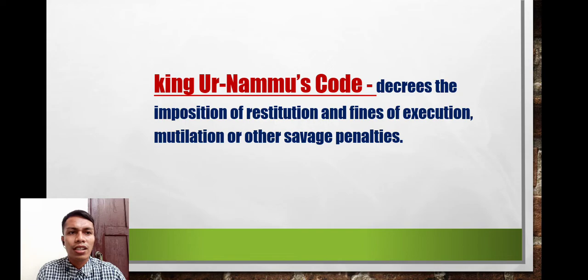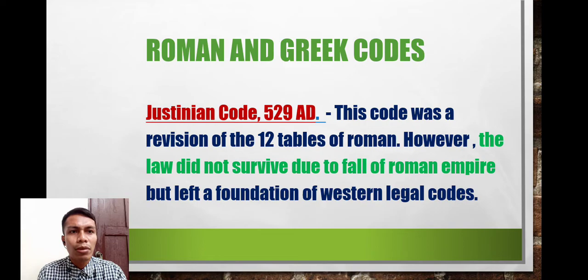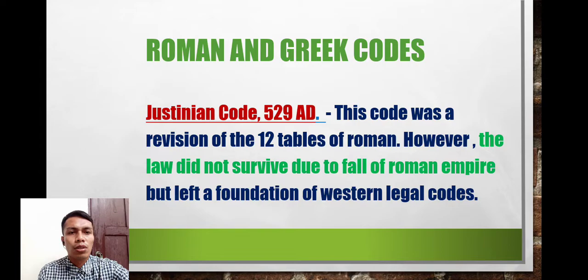Next are the Roman and Greek codes. The Justinian Code, dating from 529 AD, was a revision of the Twelve Tables of Roman law. However, the code did not survive due to the fall of the Roman Empire, but it left a foundation for western legal codes.